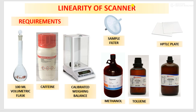Next is linearity of scanner. For UV light we will discuss first. For that, the requirement is a 100 ml volumetric flask, caffeine standard, calibrated weighing balance, methanol for preparation of caffeine solution, sample filter, and toluene and acetone. These two solvents will be used as a mobile phase, along with an HPTLC plate.